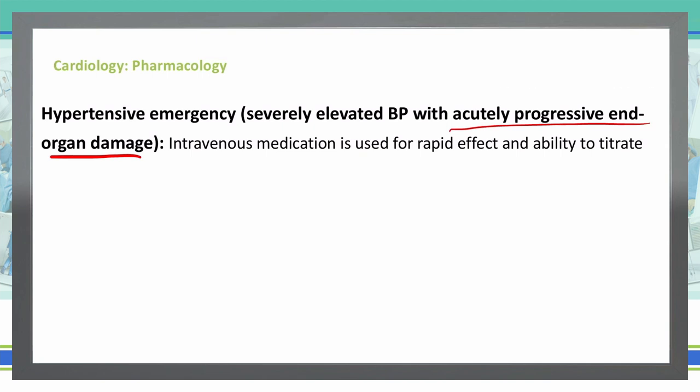We need to decrease the blood pressure because we're seeing systemic signs of that high blood pressure in the patient. We need to use IV medication because it requires a rapid reduction in blood pressure.